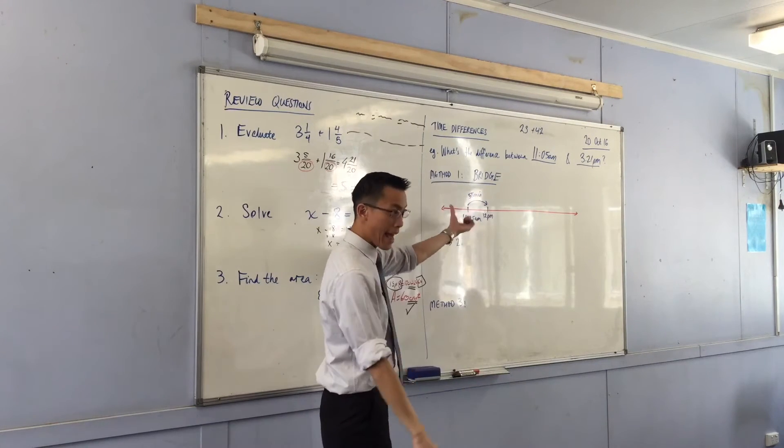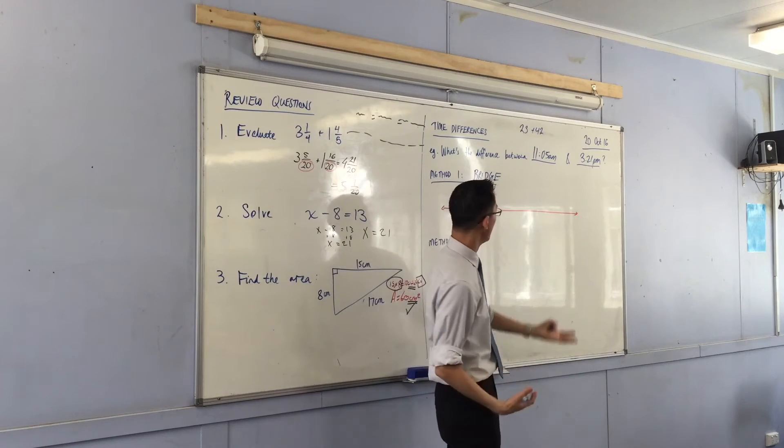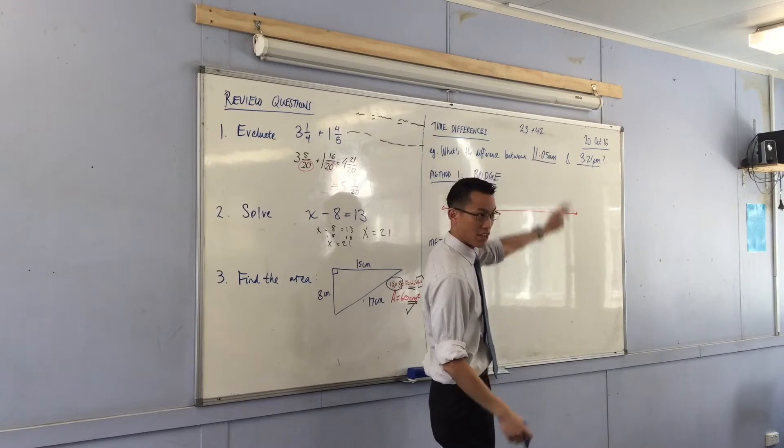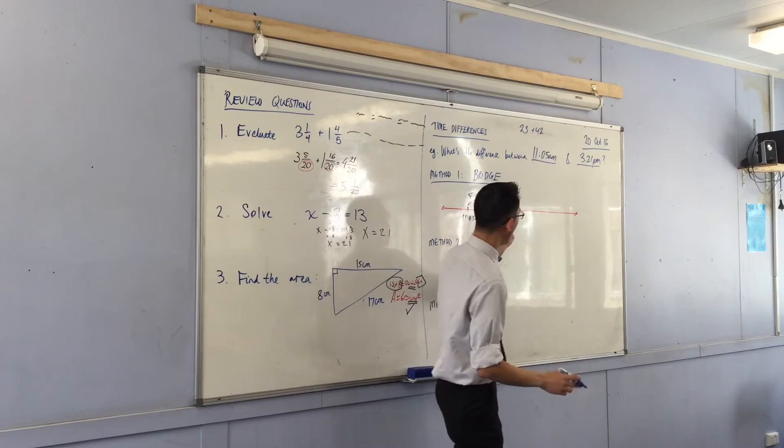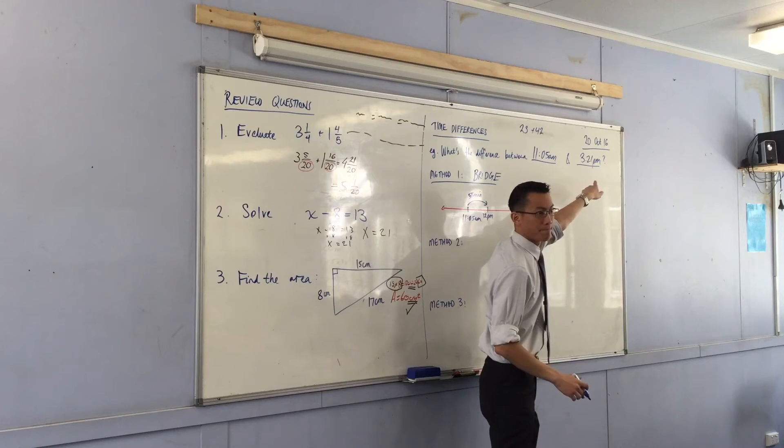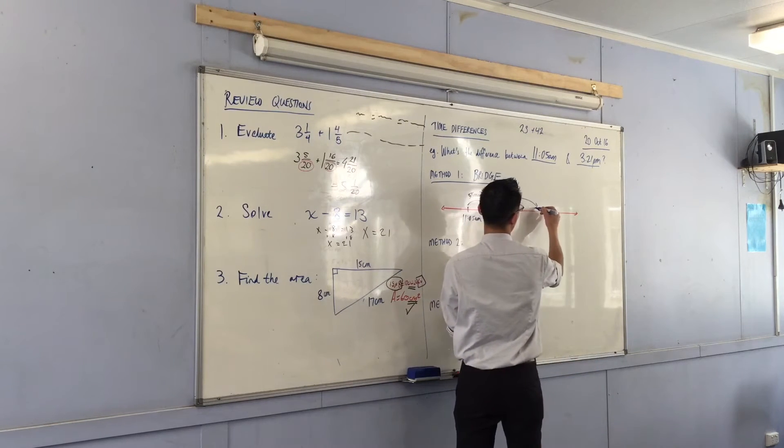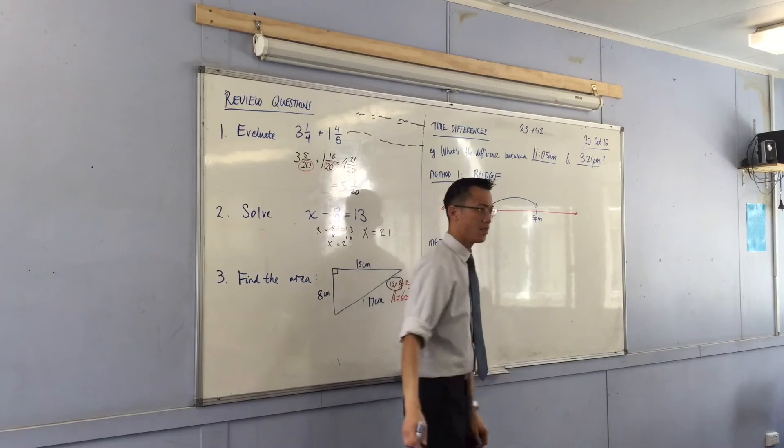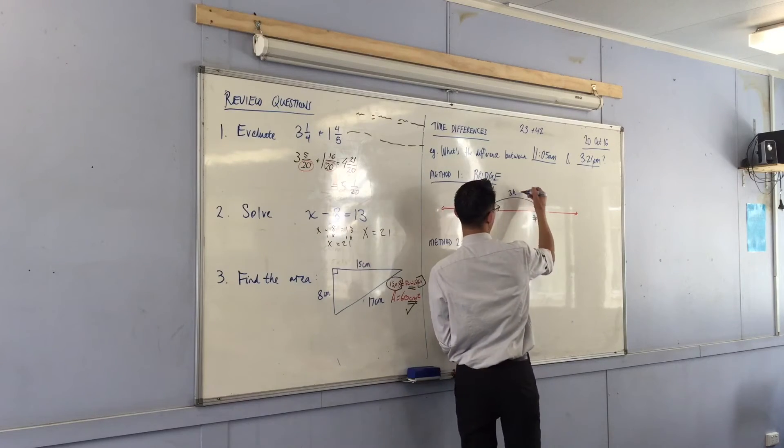Now that I'm on an hour, now I want to get as close as I can in hours to the final time, the destination time. So I'm at 12. What's the closest hour before 3:21? It's just 3. So from 12 all the way to 3, how many hours is that? It's just three hours.